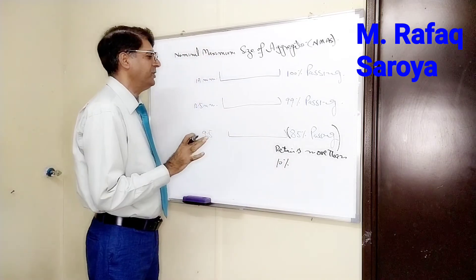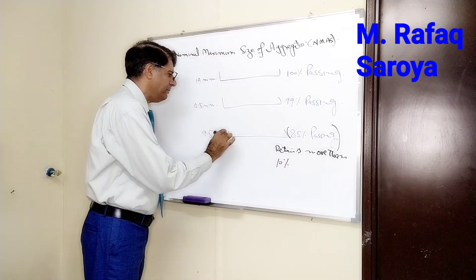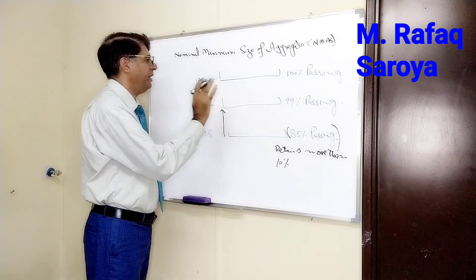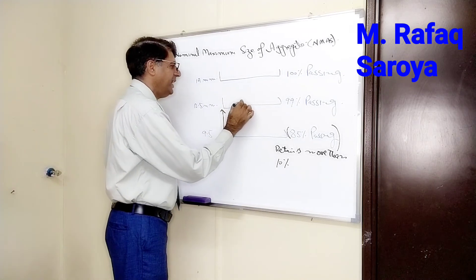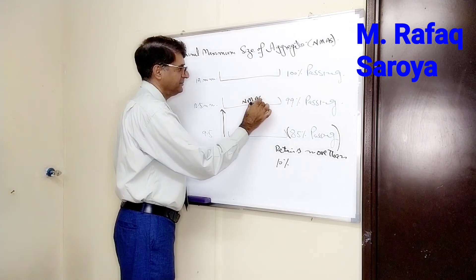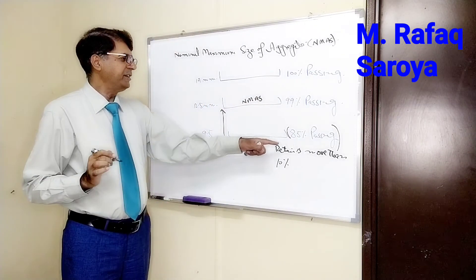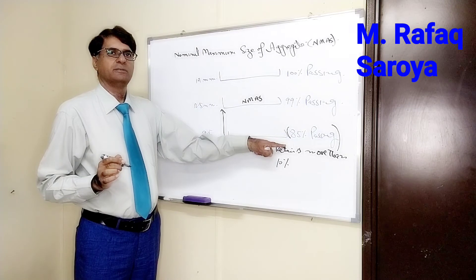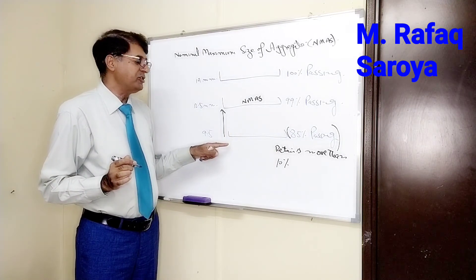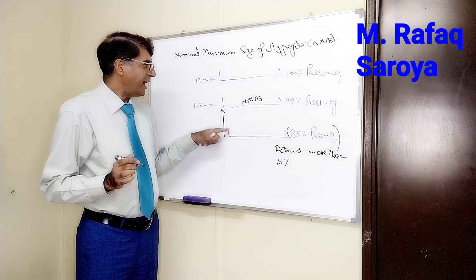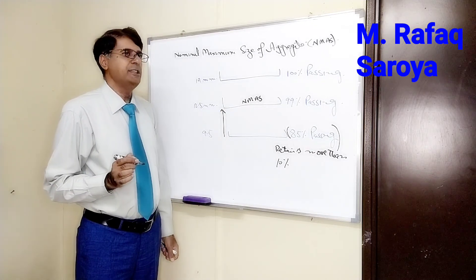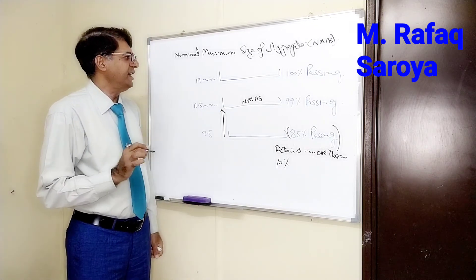As per the definition, since more than 10% is retained at this sieve, the next sieve of higher order than this — which is 12.5 mm — would be taken as the Nominal Maximum Aggregate Size. The sieve of order higher than the one where more than 10% is retained is defined as the Nominal Maximum Aggregate Size.